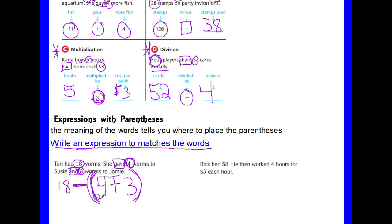So Rick had $8. He then worked 4 hours for $5 each hour. So he's going to do something. After we see that he has $8 he then worked 4 hours for $5 each. So he's going to get more money. So this is what he did next. So he had $8. This was first. Then something else happened. And we put that in parentheses.